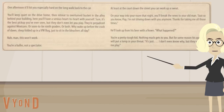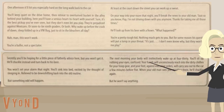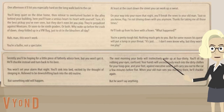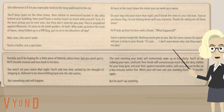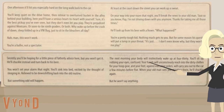You're a pretty tough kid — nothing much gets to you. But for some reason, his question will put a lump in your throat. 'It's just... I don't even know why, but they won't let me play.' Secretly, you'll be hoping for a little piece of fatherly advice, but you won't get it. He'll chuckle instead and turn back to his beer. You won't set your alarm that night. You'll sink into bed, excited by the thought of sleeping in, relieved to be downshifting back into the old routine. But something odd will happen. The next morning, your body will instinctively wake up at 4:30. You'll sit up, rubbing your eyes, confused. Your hands will unconsciously reach into the dirty clothes for your hoop gear. And your feet, against executive orders, will carry you out to the car a few minutes before 5. When your old man sees you standing there, he'll chuckle again — but he won't say anything.